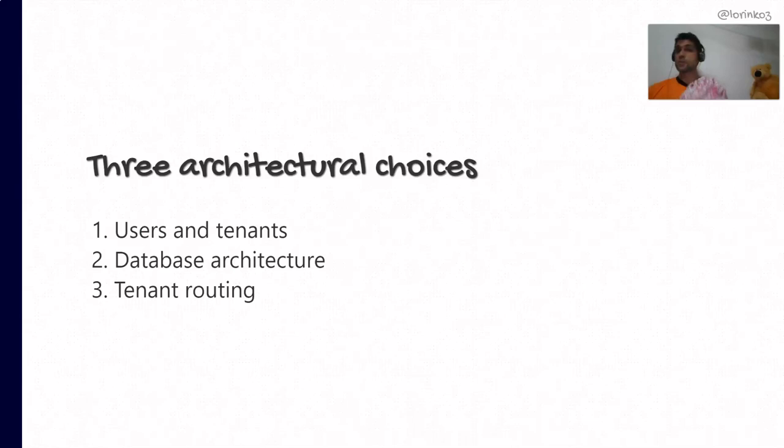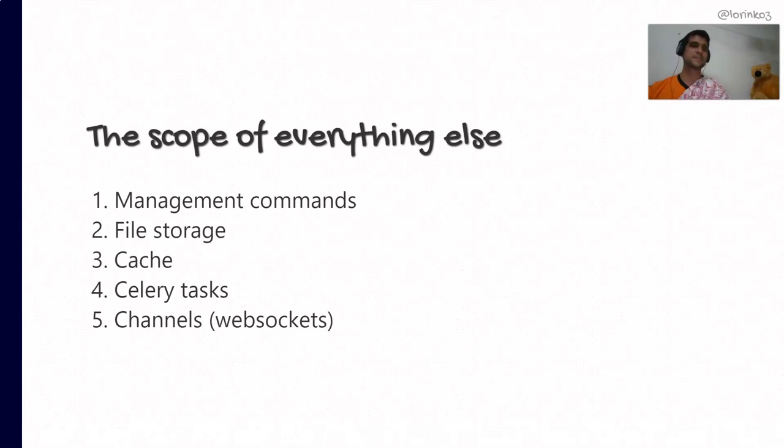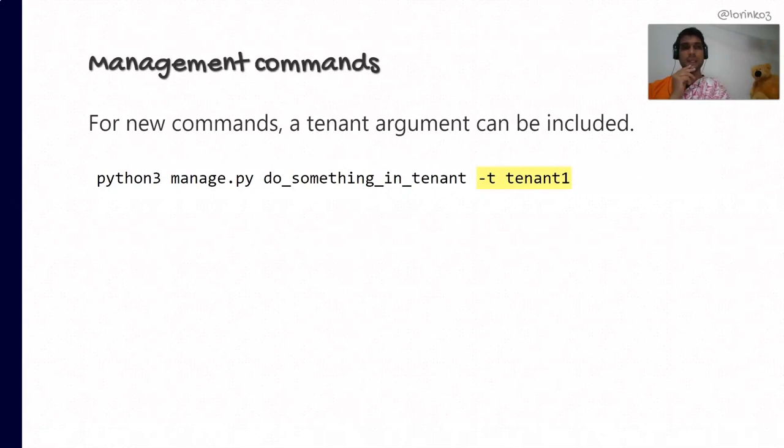Notice that some of these choices play nicely together while others don't make sense combined — making one choice affects the possible options in the next architectural choice. Now, there is more to Django than just the active tenant and the three architectural choices, so let's take a quick look at the scope of everything else in the framework — at least five parts.